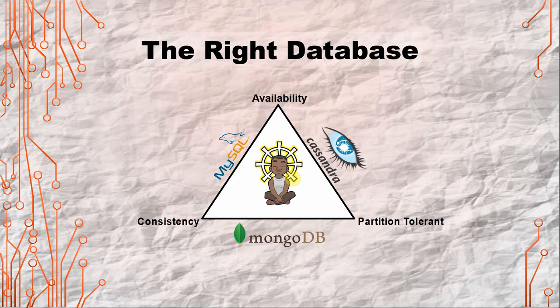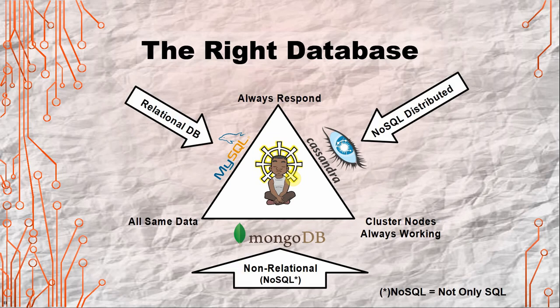Some of these terms sound unfamiliar, so I'm going to show you a different way to think about it. Databases like MySQL, Microsoft SQL, and many others are relational databases — you have tables, columns, and so on. Then you have MongoDB, which is a non-relational database, a NoSQL database, and it's a different way to store and access information. Then you have Cassandra, which is a NoSQL distributed database. If you grab a relational database, it's because you want to ensure that you always have the same data.